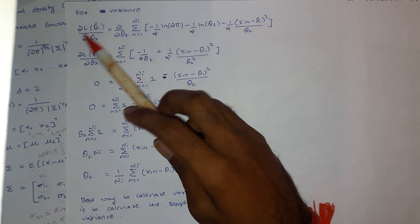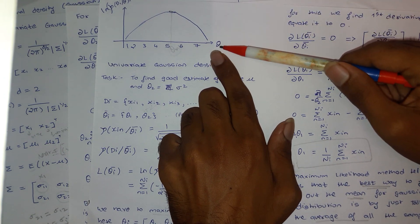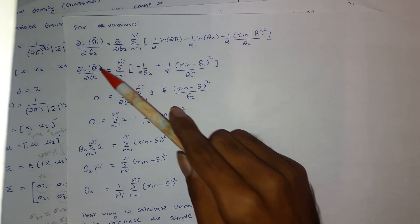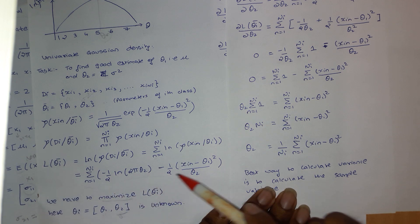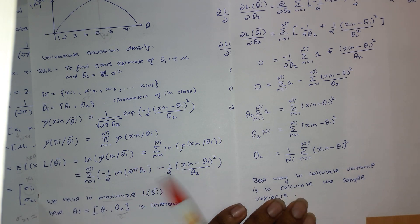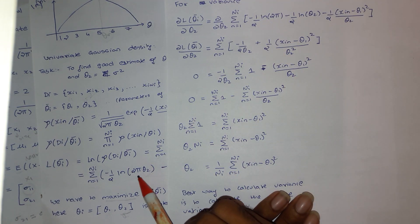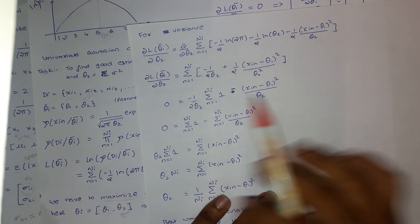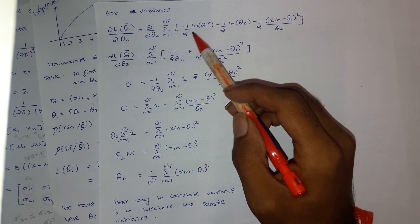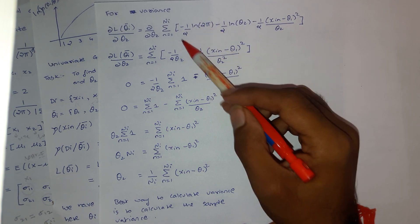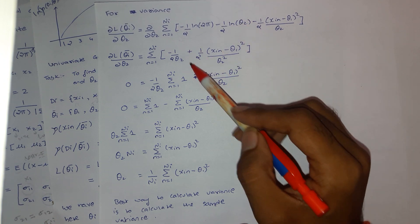Now let us calculate the same for variance. We differentiate the log-likelihood with respect to theta_2 (the variance). The log-likelihood has theta_2 appearing in two places, so we separate the two terms. The derivative of the first term (which has no theta_2) is zero. The derivative of the log(theta_2) term with respect to theta_2 is minus one over 2*theta_2, using the rule that the derivative of log(x) is 1/x.